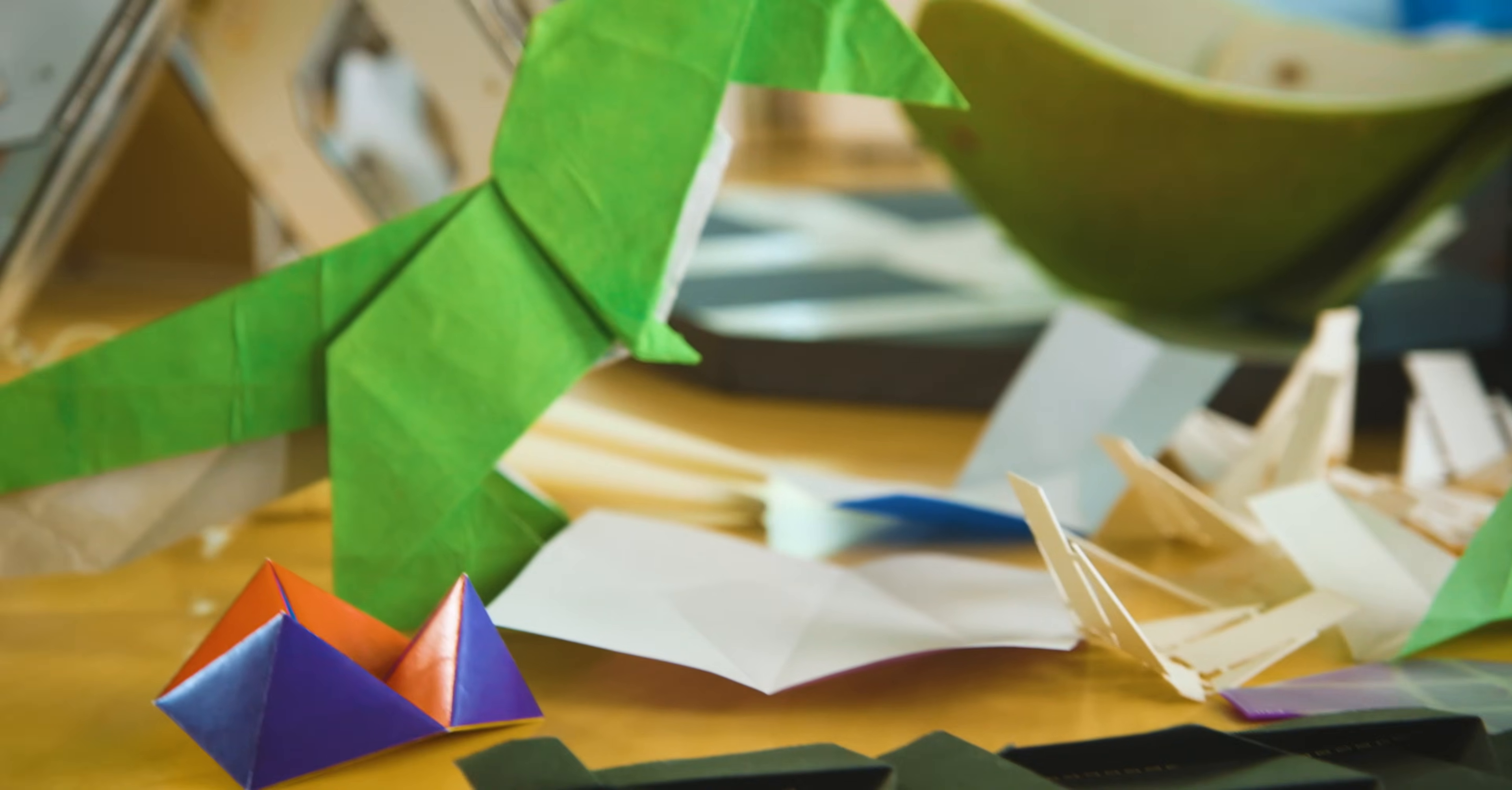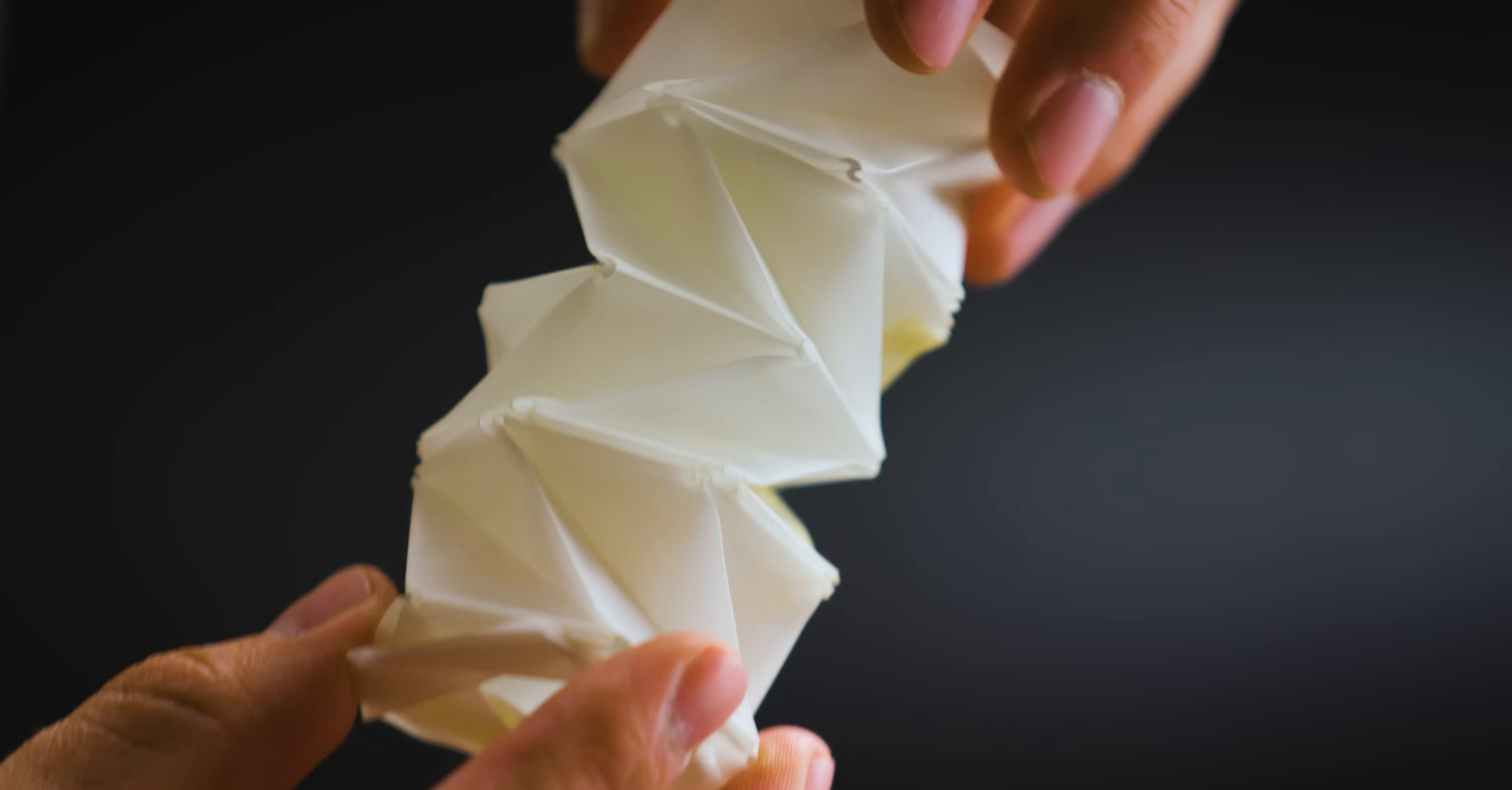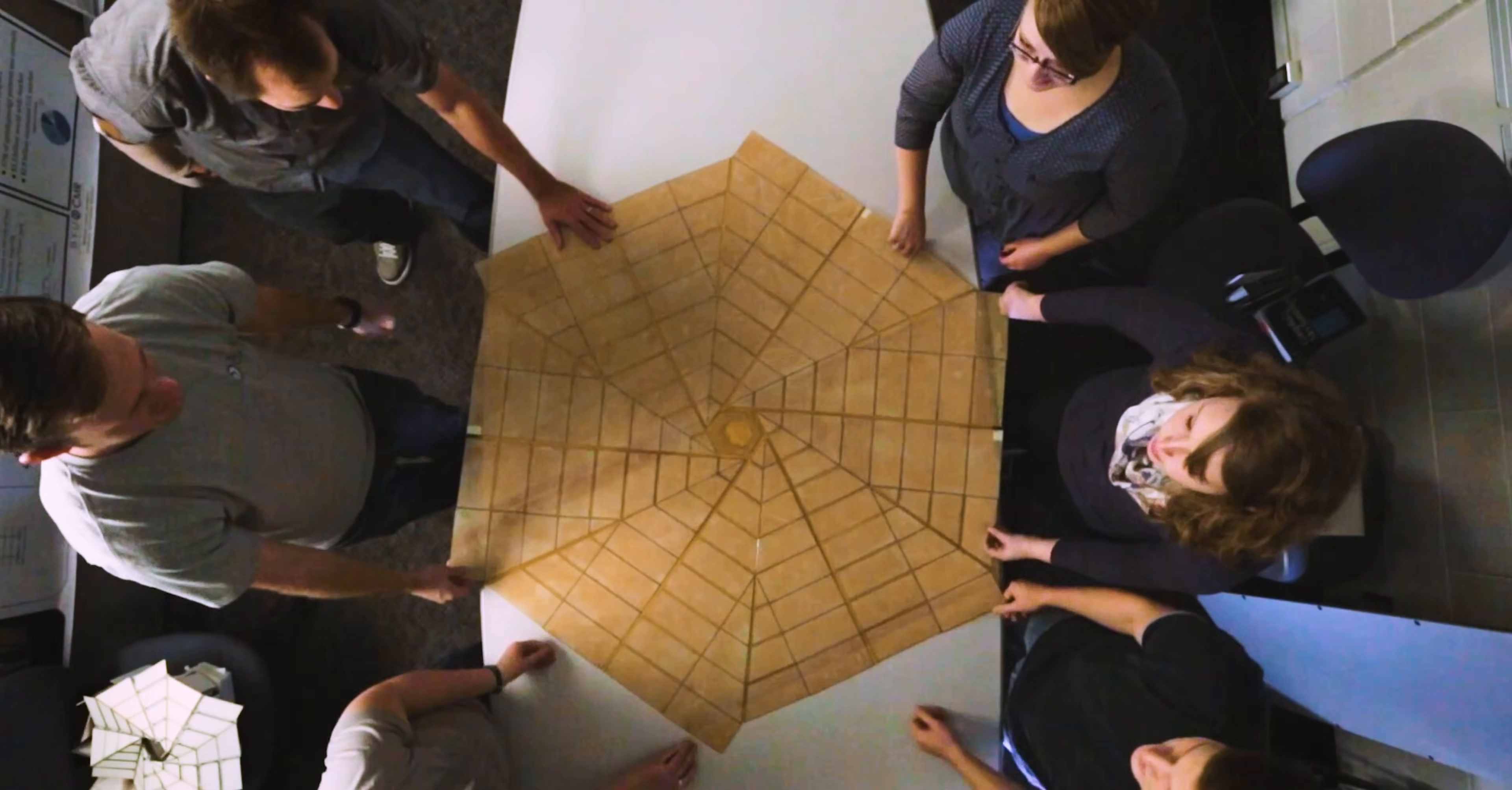To understand compliant mechanisms, think of origami. It's one piece of paper that then folds up, gets all that complex motion but with no hinges, no bearings, no assembly, just one piece of material.